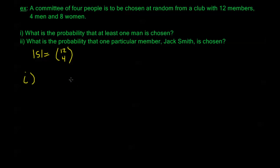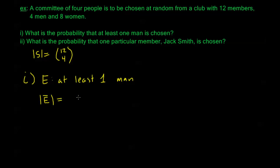E is the event that at least one man is chosen. So then E-complement, or E-bar, is the event where no men are chosen — or in other words, all women are chosen. The number of ways to make a four-person committee out of eight women is eight choose four, so there are eight choose four possible committees that consist of only women.